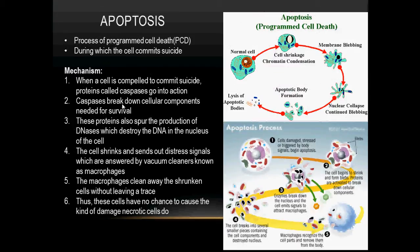Next, apoptosis. Apoptosis is also known as programmed cell death — this is when the cell decides to kill itself. So let's look at the mechanism. When a cell decides to commit suicide or kill itself, proteins called caspases go into action. What these caspases do is that they break down cellular components that are necessary for a cell's survival.